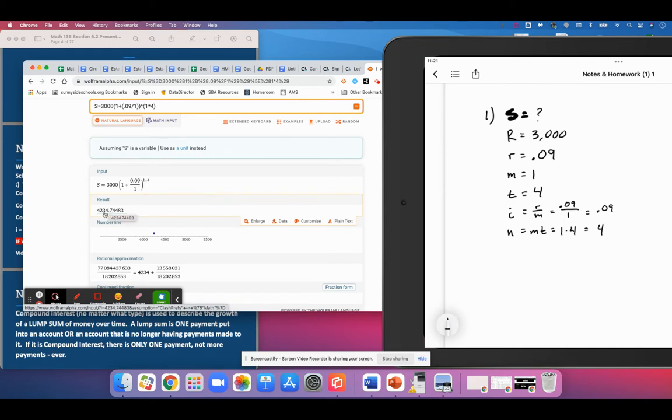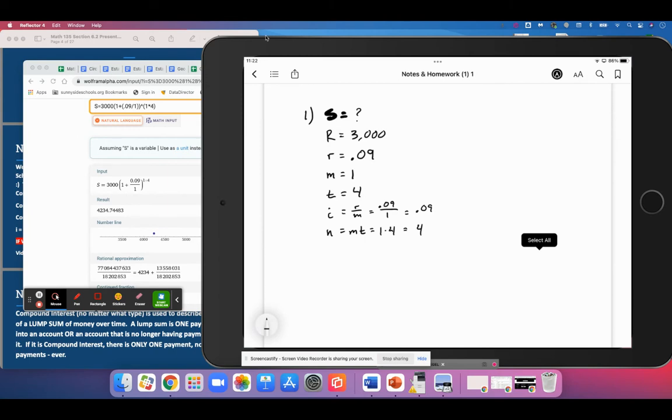You just have to make sure that your input looks how it's supposed to look. Our result would be 4,234.74. So the way I'm going to record this on my iPad is I will write the compound interest formula: S equals R times one plus i to the power of n.